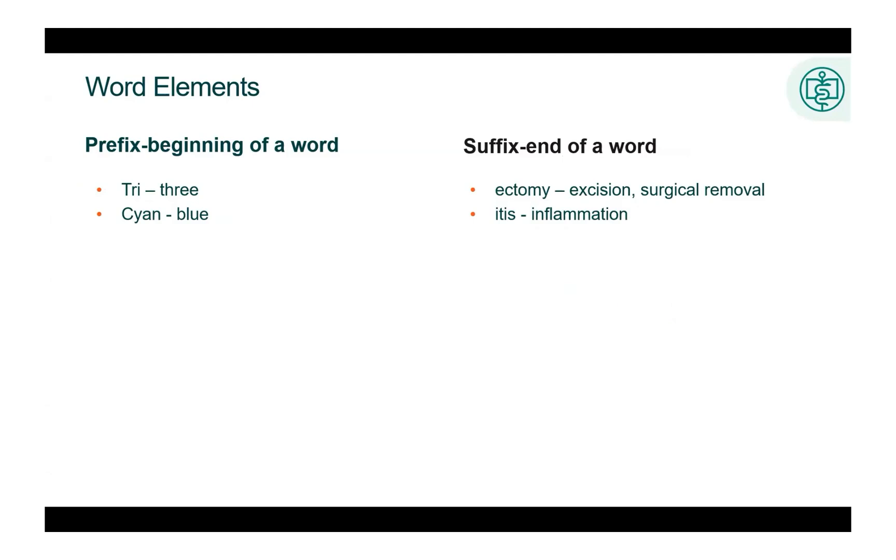An example of a prefix indicating a number is tri, meaning three. The tricuspid valve has three points or cusps. An example of a prefix indicating color is cyan, which means blue. Cyanosis is bluish color of the skin, which indicates a lack of oxygen.